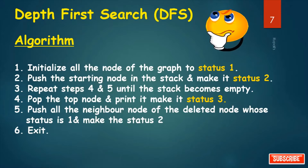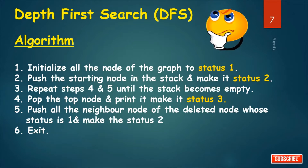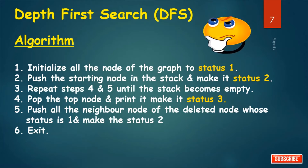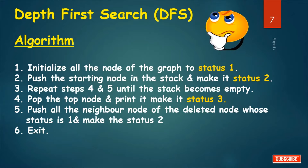What is the algorithm for DFS traversal? First, initialize all nodes of the graph to status 1. Push the starting node in the stack and make it status 2. Repeat steps 4 and 5 until the stack becomes empty. Step 4: pop the top node, print it, and make it status 3. Step 5: push all neighbor nodes of the deleted node whose status is 1 and make their status 2. Finally, exit.